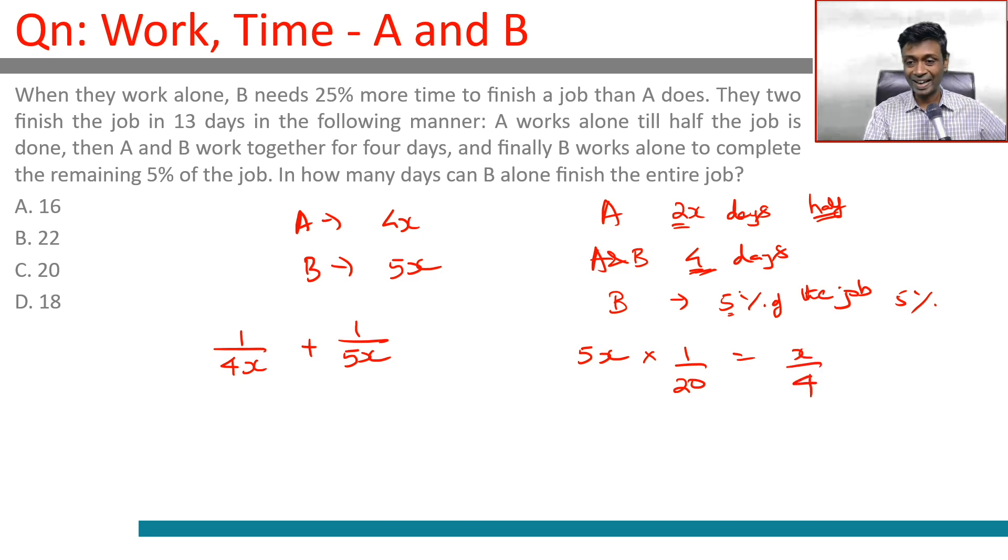So B works for x/4 days, A works for 2x days, and A and B together work for 4 days. So 2x plus 4 plus x/4 equals 13. This gives us 2x plus x/4 equals 9, or 9x/4 equals 9.